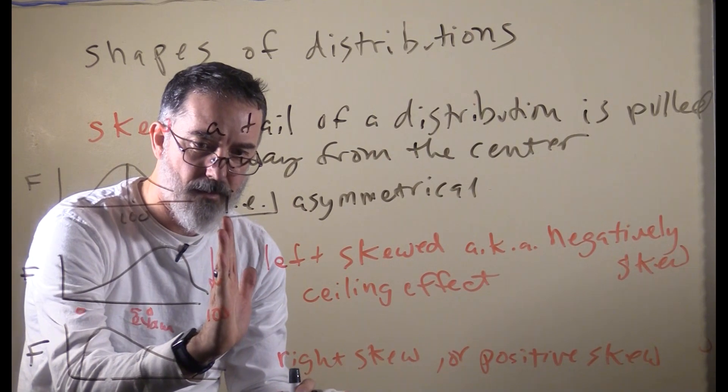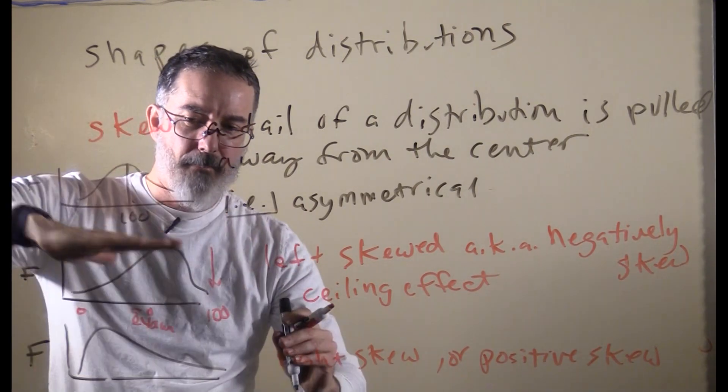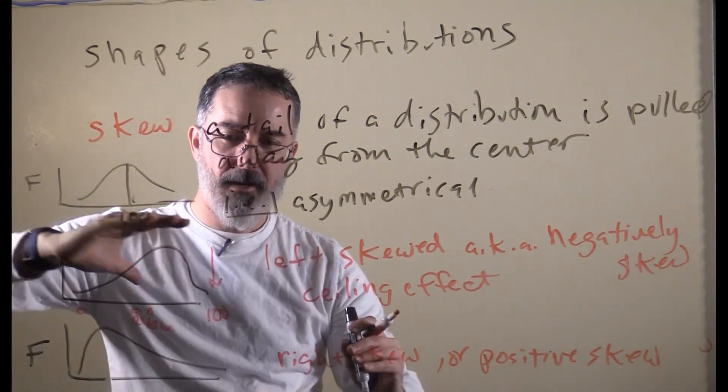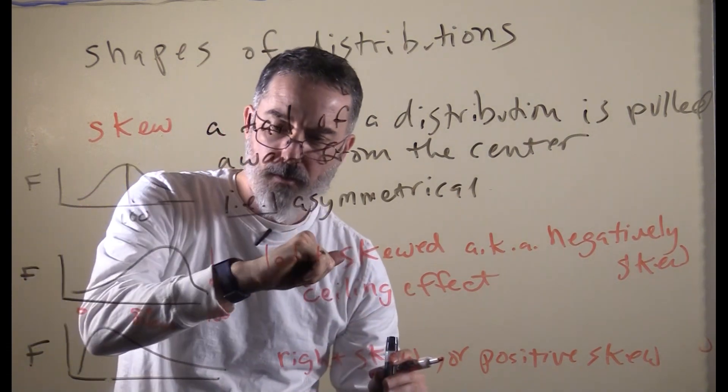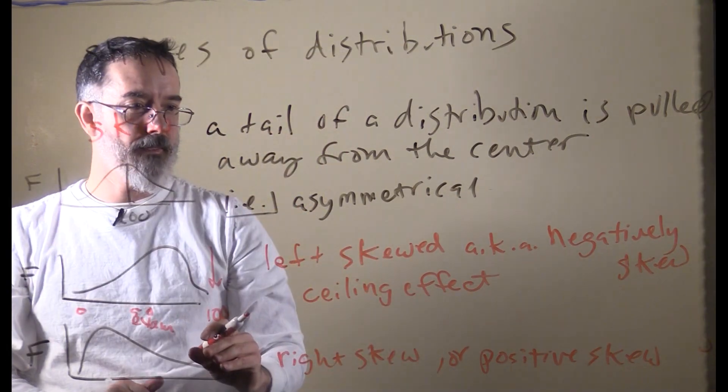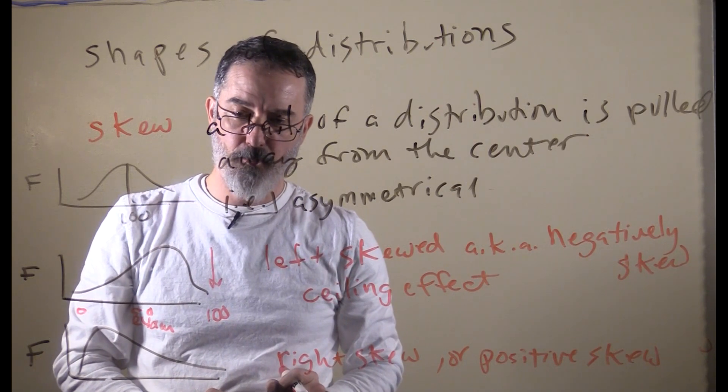When there is a ceiling effect, when there is an artificial cap, what often happens is the scores get squished up against that cap because they cannot go any higher. You end up with a left skewed distribution.